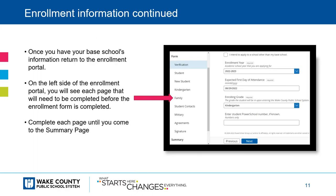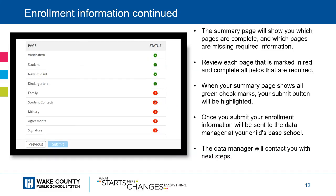Once you have your base school's information, return to the enrollment portal. On the left-hand side of the enrollment portal, you will see each page that needs to be completed before you can move on to the next step. Please complete each page until you make it to the summary page. The summary page will show you which pages are complete and which pages are missing required information. A completed page will be denoted with a green check mark.